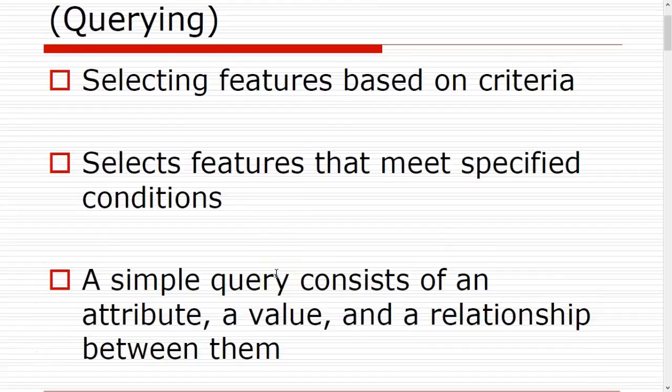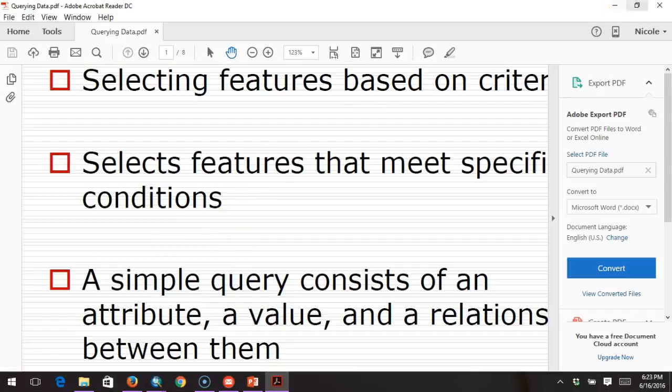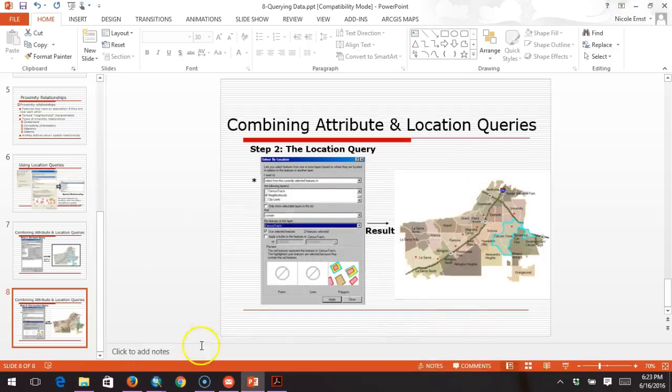When we construct a query, we have to keep three things in mind to construct a simple query. We are going to be picking an attribute, a value from that attribute table, and then we have to establish a relationship between the attribute and value — such as is it equal to, is it greater than, and so on. So let's go through a couple of examples of how we can ask our data questions based on attributes.